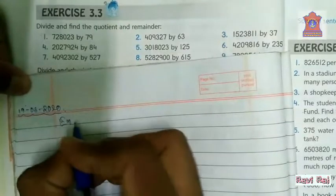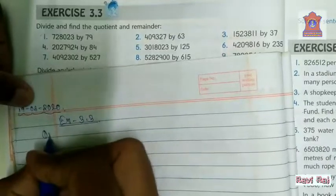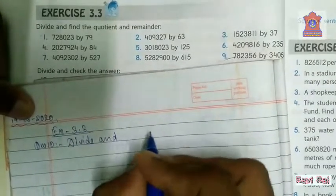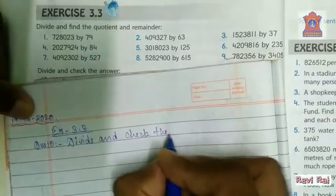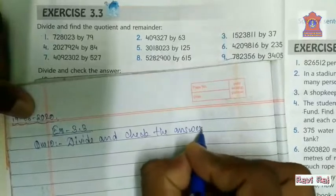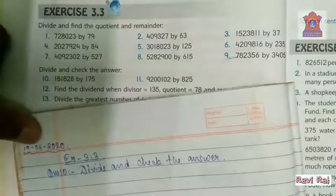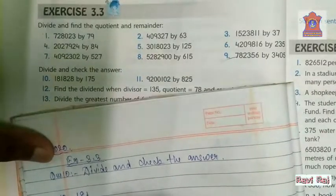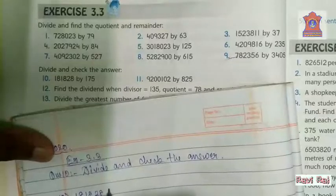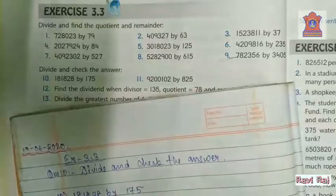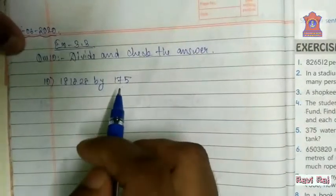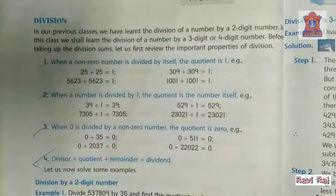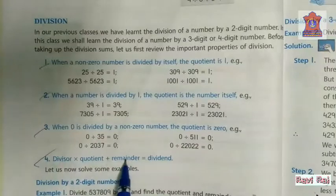Exercise 3.3, question number 10: divide and check the answer. The tenth question is 181828 divided by 175. In this question, we will be following the fourth property of division, which is: divisor into quotient plus remainder equals to dividend.